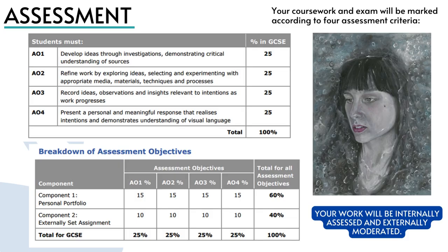Both of your projects are assessed in the same way. 25% of your marks will be your artist research and how you use it in the development of your ideas. 25% is your experimentation with media and how you use that in your final piece. 25% are your records of observations, your drawings, photographs and design ideas and how they all link together. And 25% is your final piece.